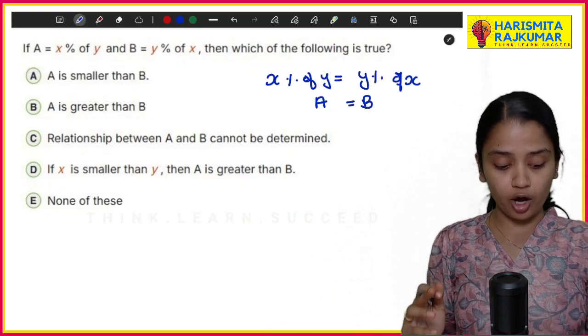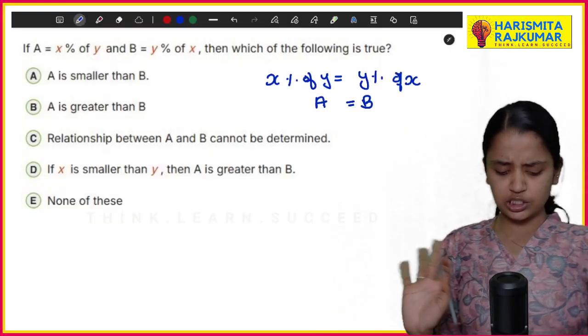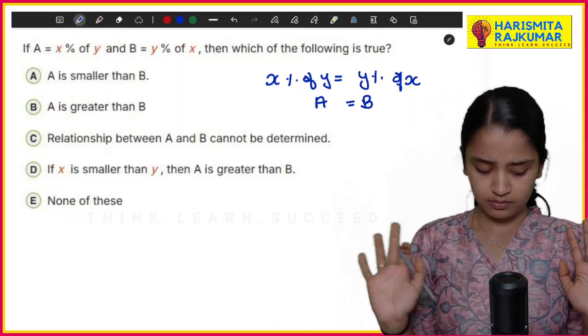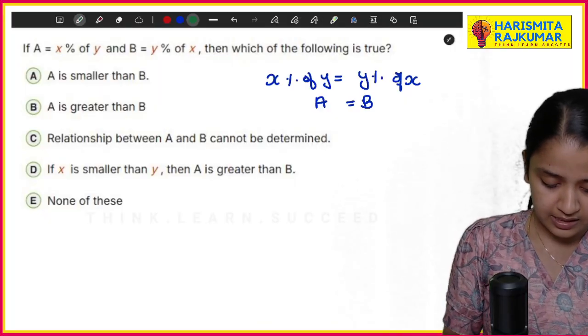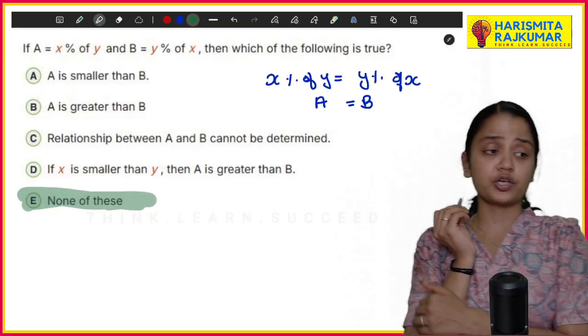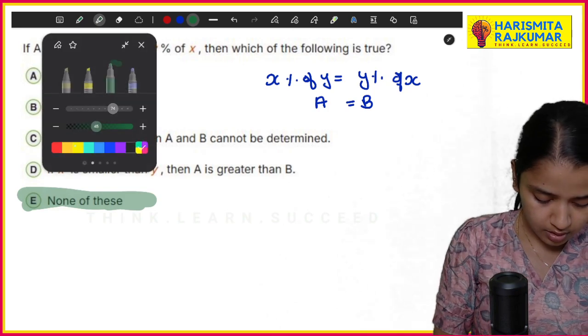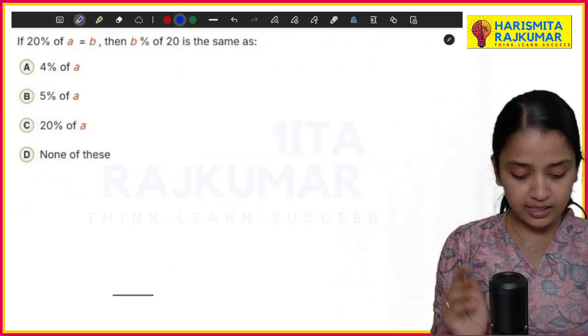So let us check the options: A is smaller than B, A is greater than B, relationship between A and B cannot be determined, if x is smaller than y then A is... None of these is your answer. So the answer for this question is none of these. Now let's see the next one.